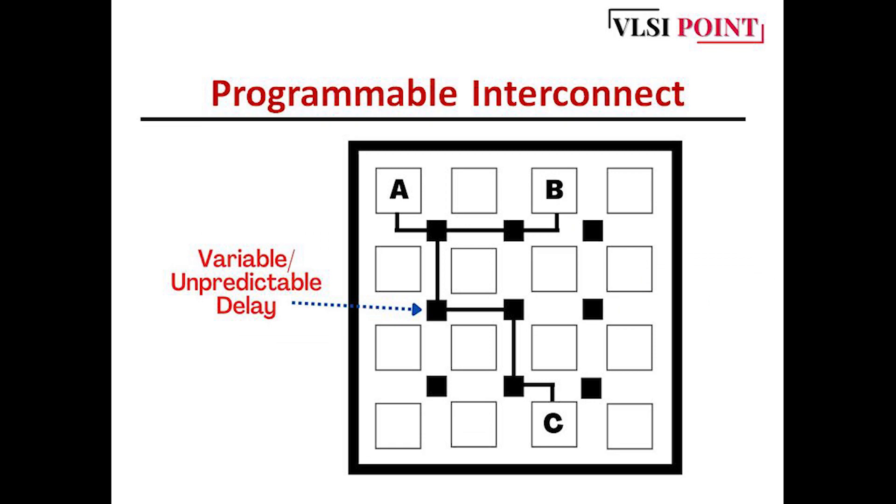The second one is programmable interconnect. You can see here we have connected A, B, and C blocks. This is A, this is B, and this is C, and how we have connected these three blocks. We have chosen this path, but this is not the only path. We can choose another path also. There are multiple possibilities.